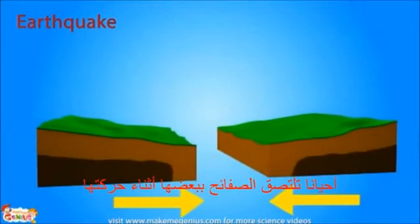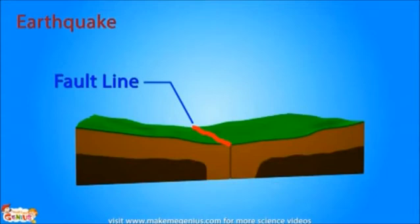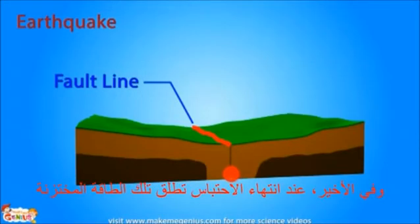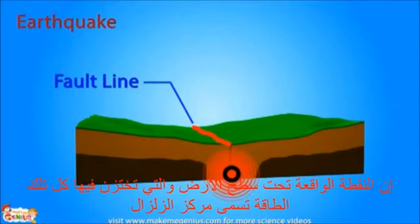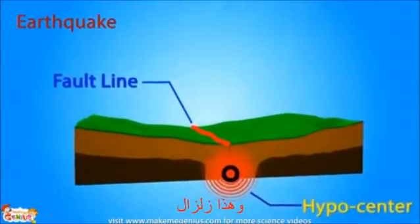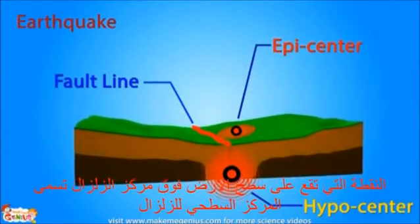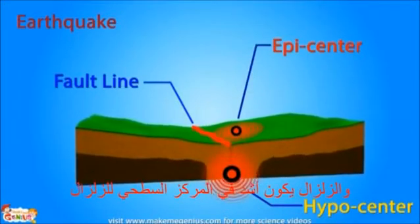Correct! Now, sometimes the plates get locked together while moving. Naturally, this happens at the plate boundaries, where two different tectonic plates meet. These boundaries are called fault lines. As the plates try to move, a lot of friction and stress builds up. Eventually, when the blockage gives way, this stored energy is released. The point beneath the Earth's surface where it is all stored is called the hypocenter. When the released energy reaches the surface, we feel the Earth shaking. This is an earthquake. The point on the surface which is directly above the hypocenter is known as the epicenter. An earthquake is strongest at the epicenter.